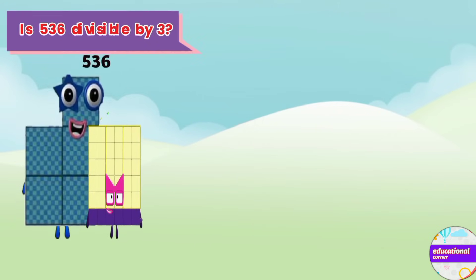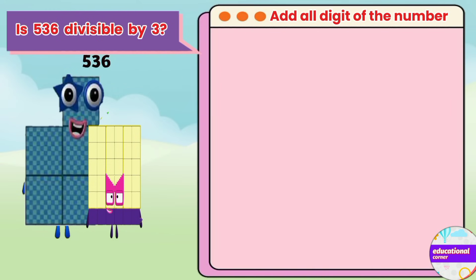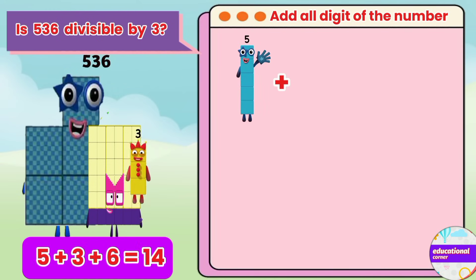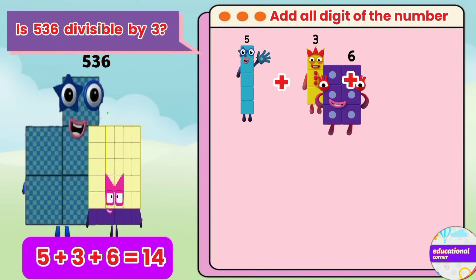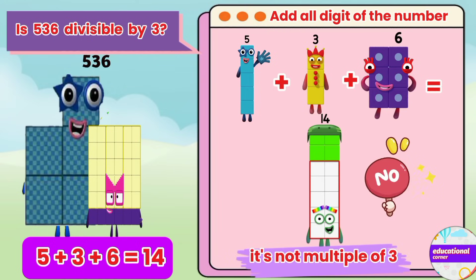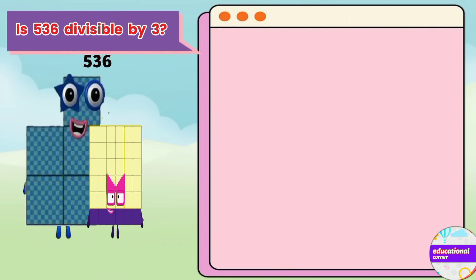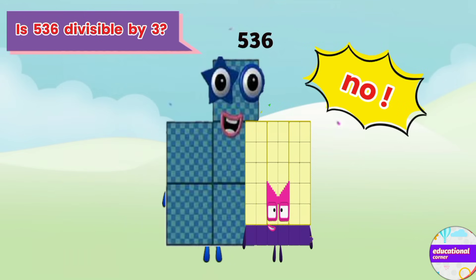Is 536 divisible by 3? Let's check. 5 plus 3 plus 6 equals 14. It's not a multiple of 3. No!